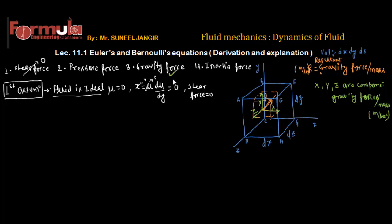On face ABCD, the pressure force is pressure intensity p acting over area dy·dz, so it is p·dy·dz. Over the distance dx there is some variation of pressure, so on the opposite face the pressure force is (p + ∂p/∂x·dx)·dy·dz. This is the variation of pressure intensity acting over area dy·dz.